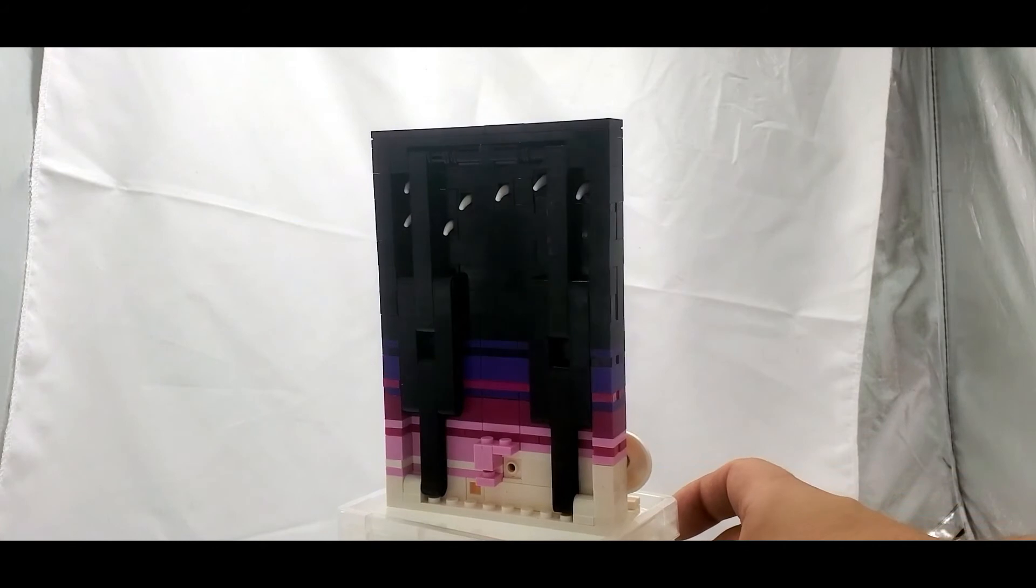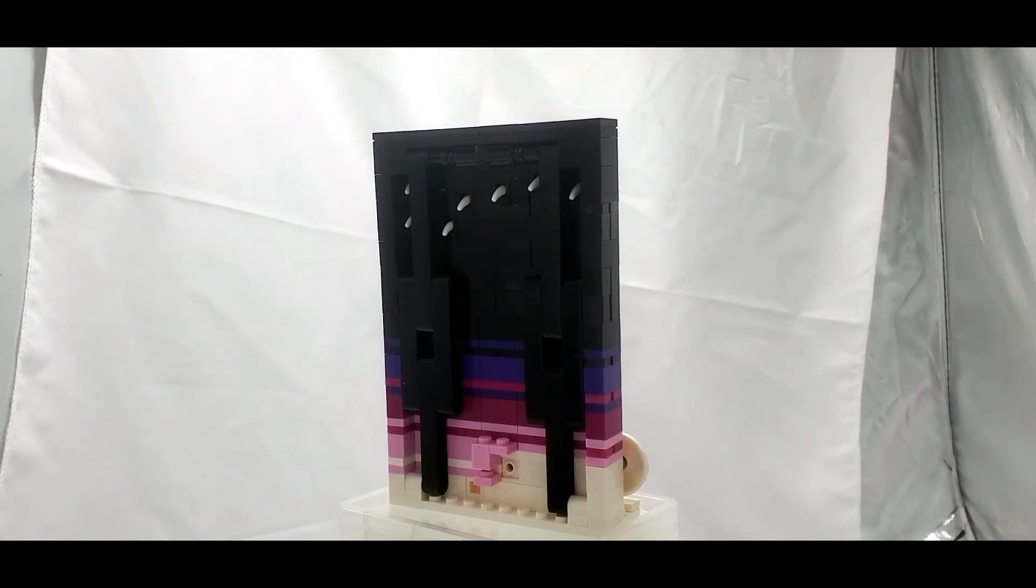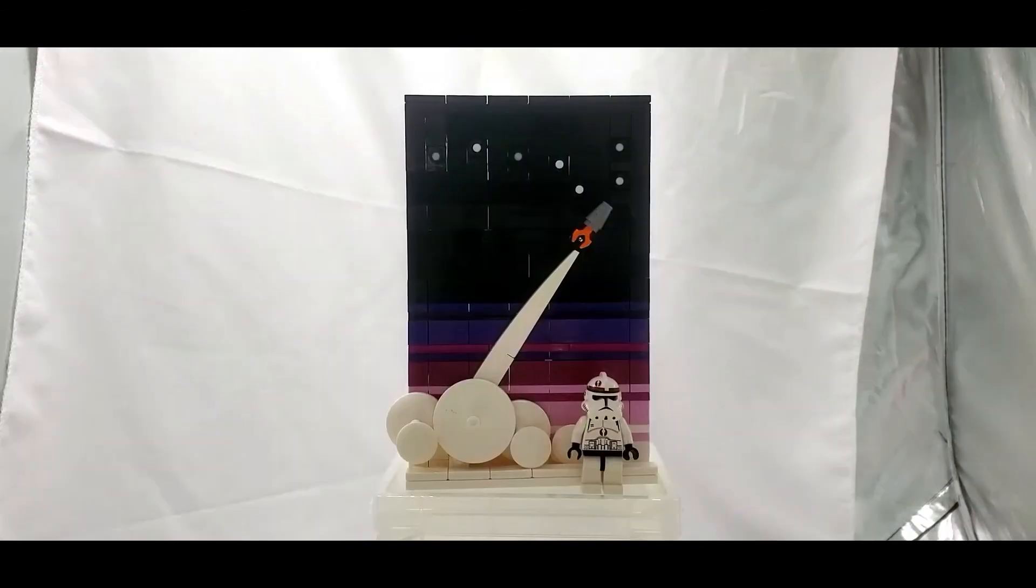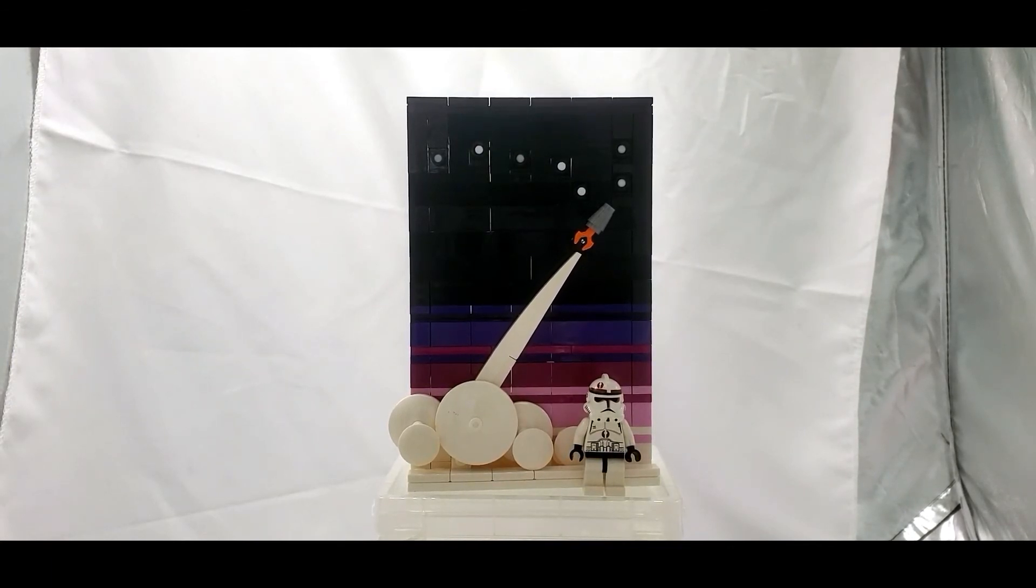If I pull all the way out you'll notice this isn't just bricks stacked on top of each other. There is a slight Technic structure here and there's a reason for that. John Carter makes all of these vignettes so that you can hang them on a wall. It is very sturdy and all this Technic makes it hold together very well.